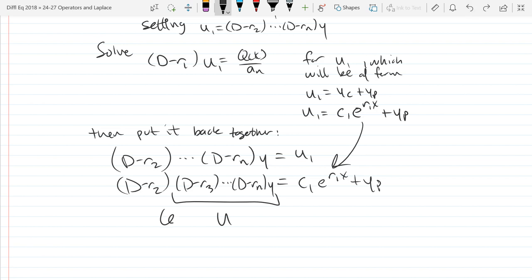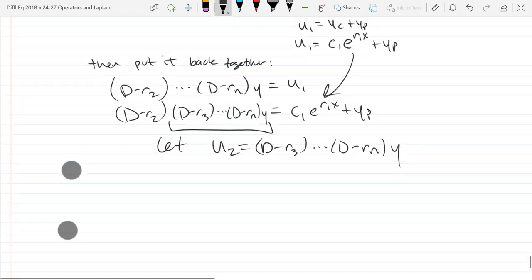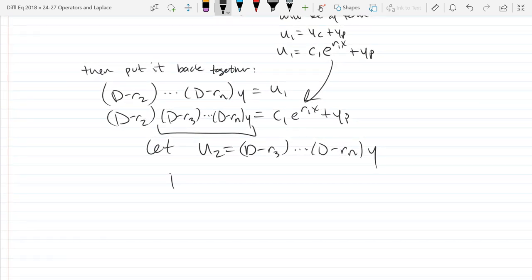(D minus rn) y, then you have (D minus r2), u2 equals u1, and you solve for u2.